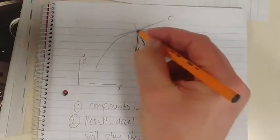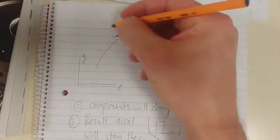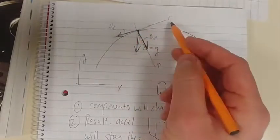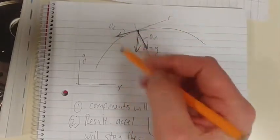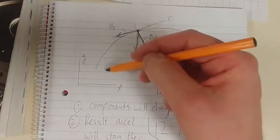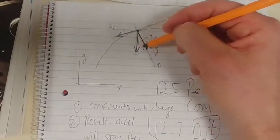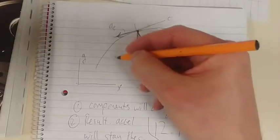And then we're going to also have this component of acceleration, a_t, which is now, it's not in the positive direction of t, it's in the negative because it's essentially slowing down as it goes up. And then these two will give us this resultant acceleration.